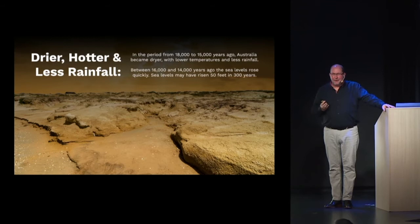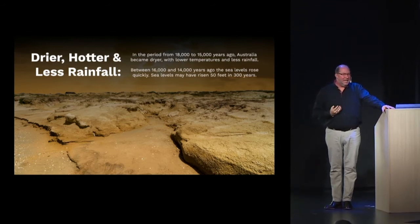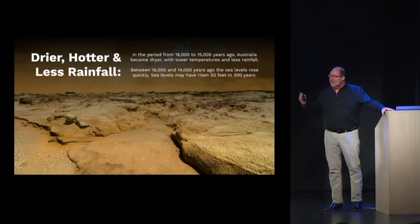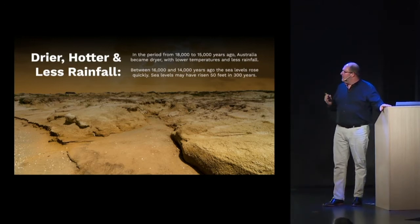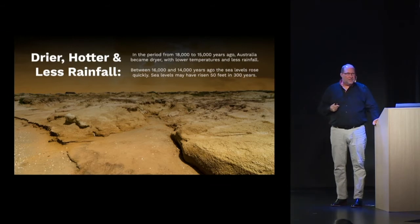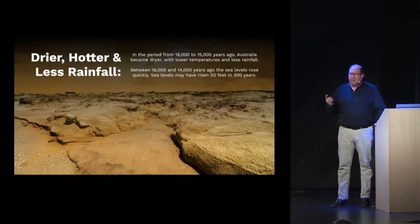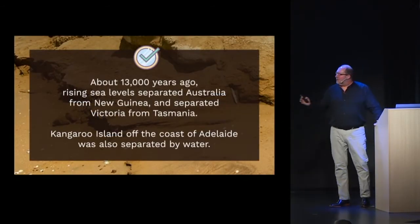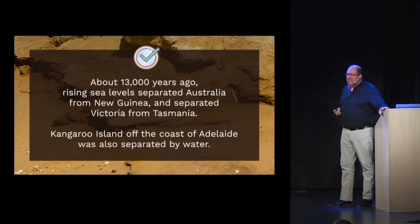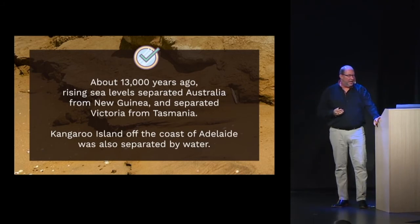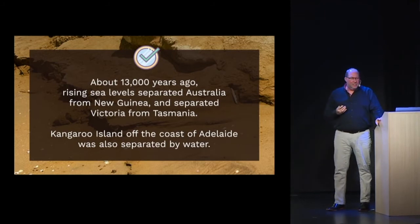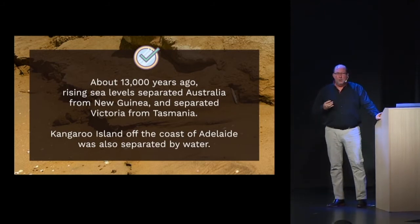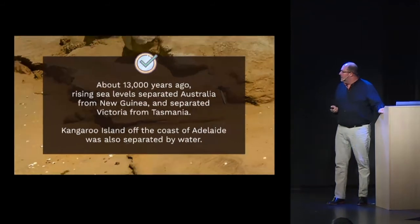Over a 300-year period, sea levels rose 50 feet, dramatically transforming the world as the early Australians knew it. This is a cycle that happens on a global scale. About 13,000 years ago, rising sea levels separated Australia from New Guinea and also separated Victoria from Tasmania in the south. Kangaroo Island off the coast of Adelaide was also at that time separated by water.